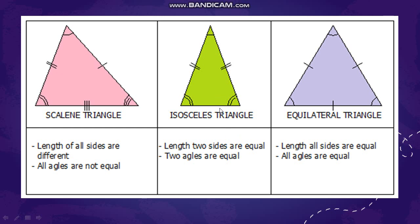The second type was isosceles triangle. In an isosceles triangle, two sides are equal, so the length of two sides are equal, and two angles are also equal. Then here the scalene triangle — all sides are different, so there is no common side, and all angles are not equal.